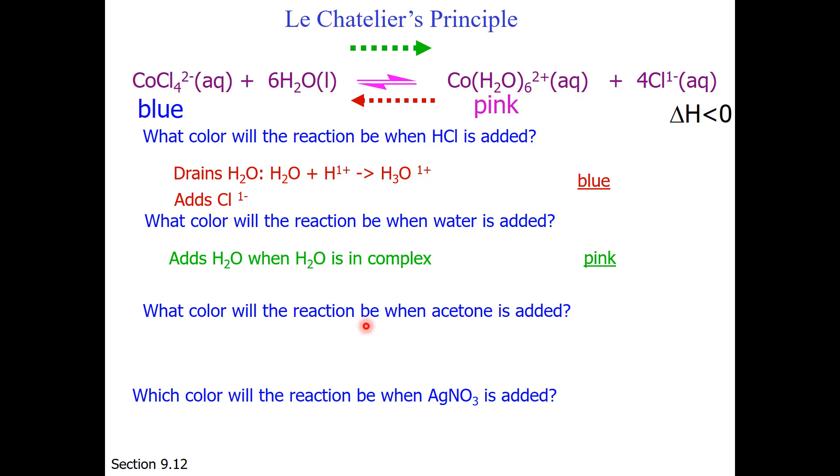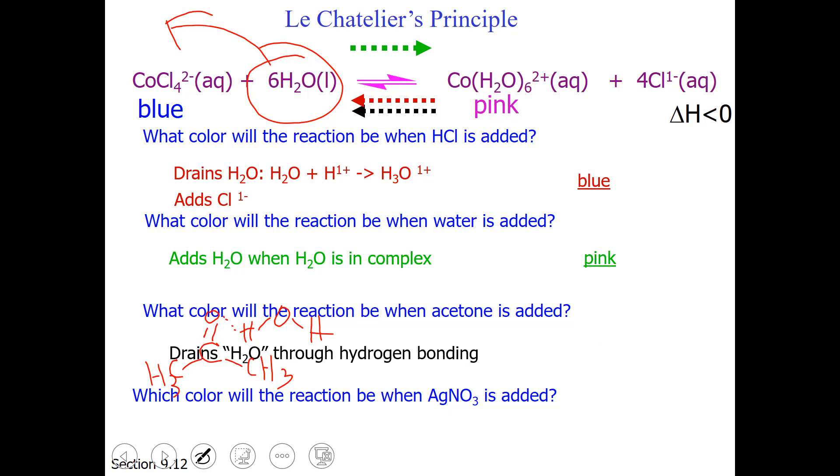I did not have a video of this one, but I'd like you to predict what color will the reaction be when acetone is added. Acetone hydrogen bonds with water. So this would be like removing reactant. Which way does removing reactant shift the reaction? Well, I hope you believe that removing reactant shifts the reaction to the left. So our solution should turn blue.